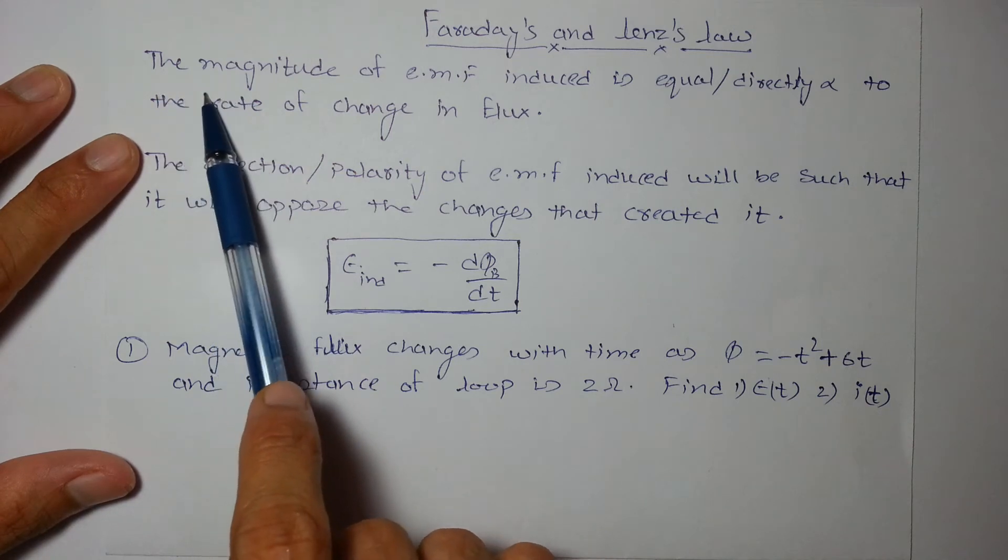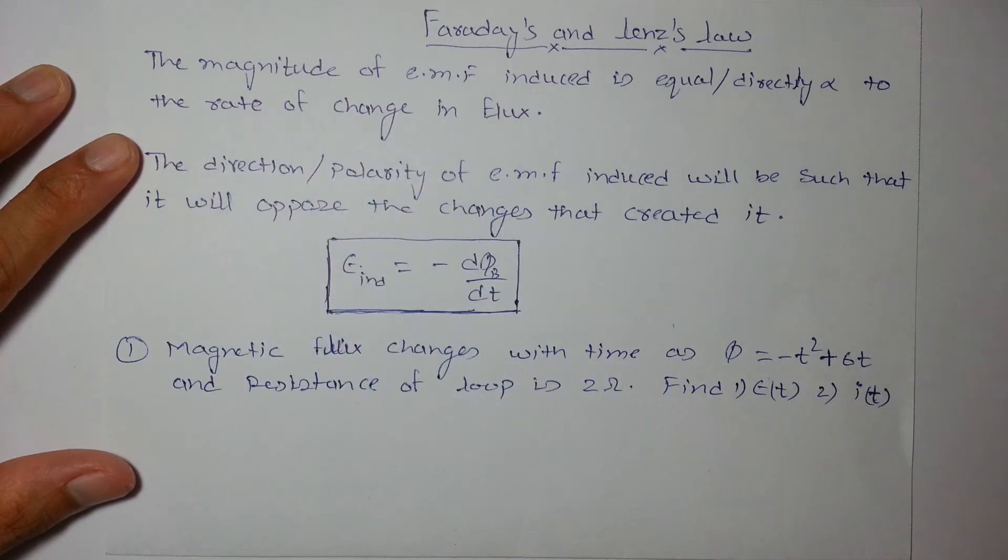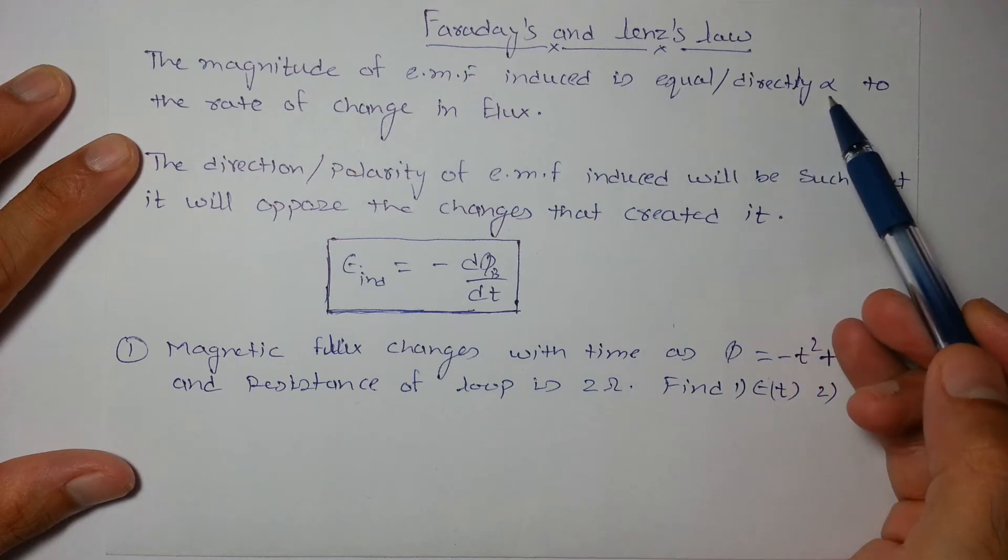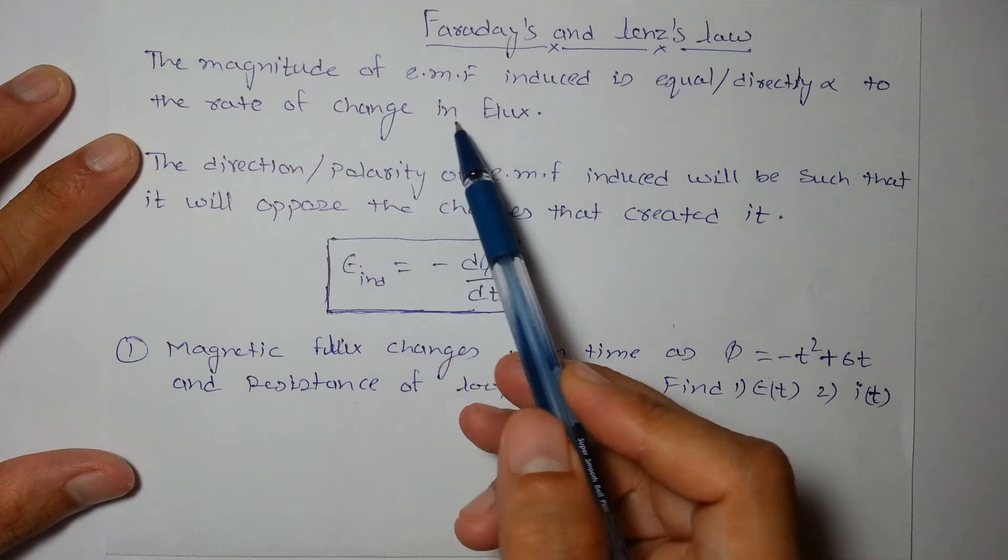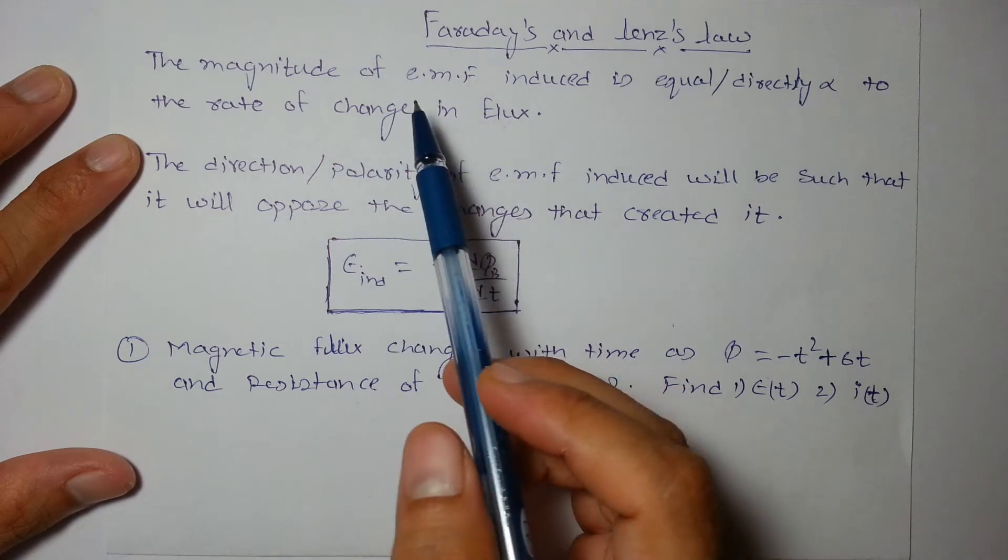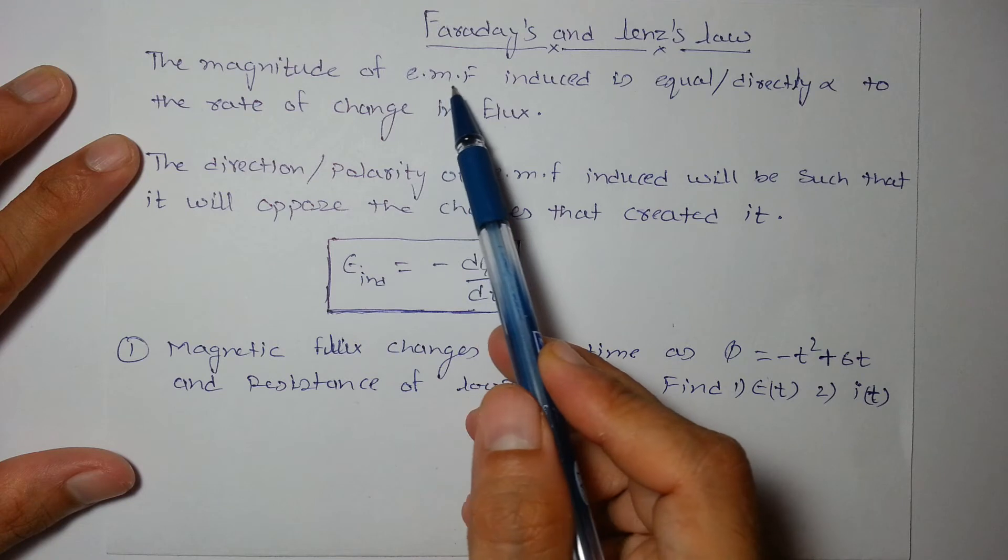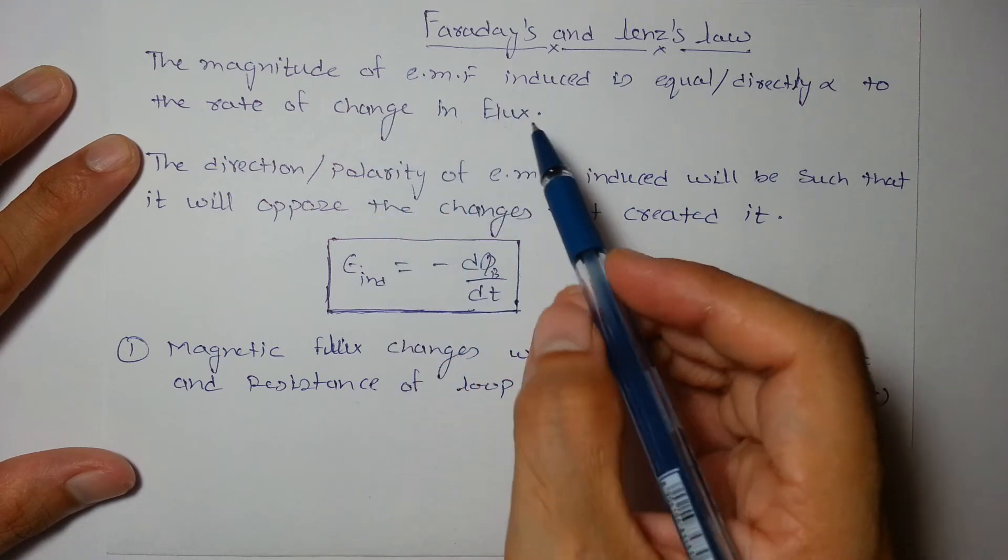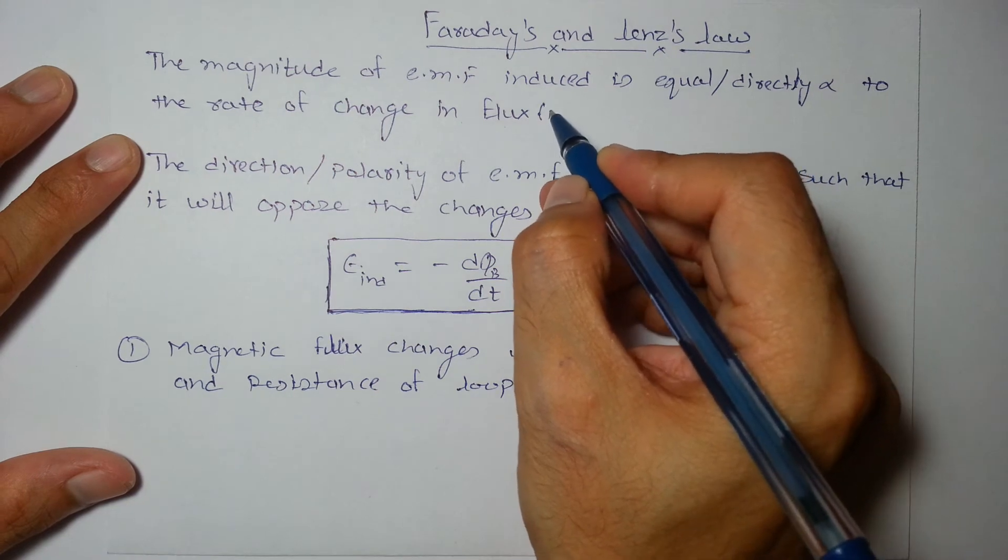Faraday's law states the magnitude of EMF induced is equal, or in some books it is written as directly proportional, to the rate of change in flux. So rate of change in flux is equal to the EMF induced, and that flux will be magnetic obviously.